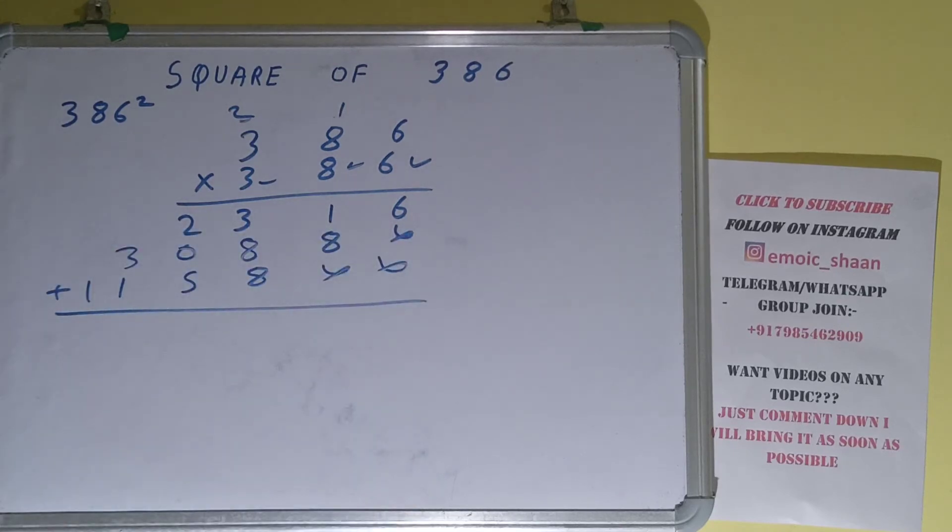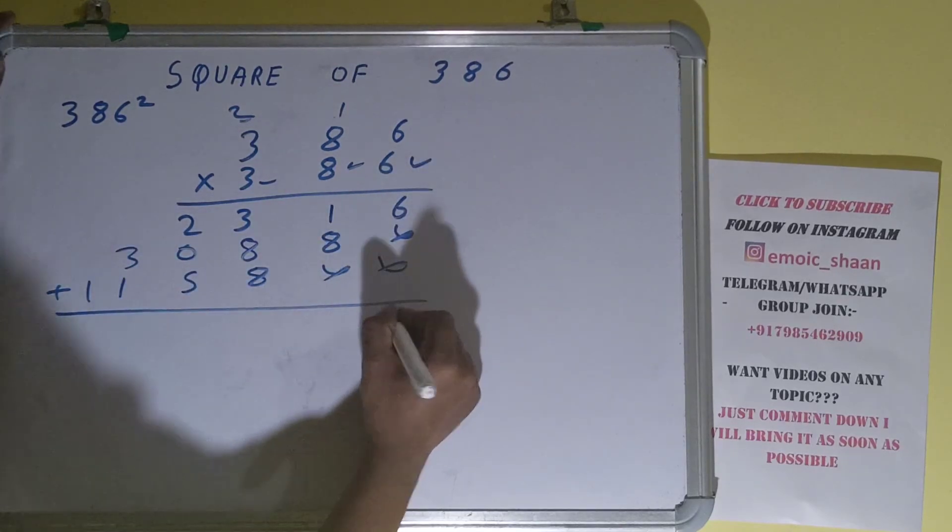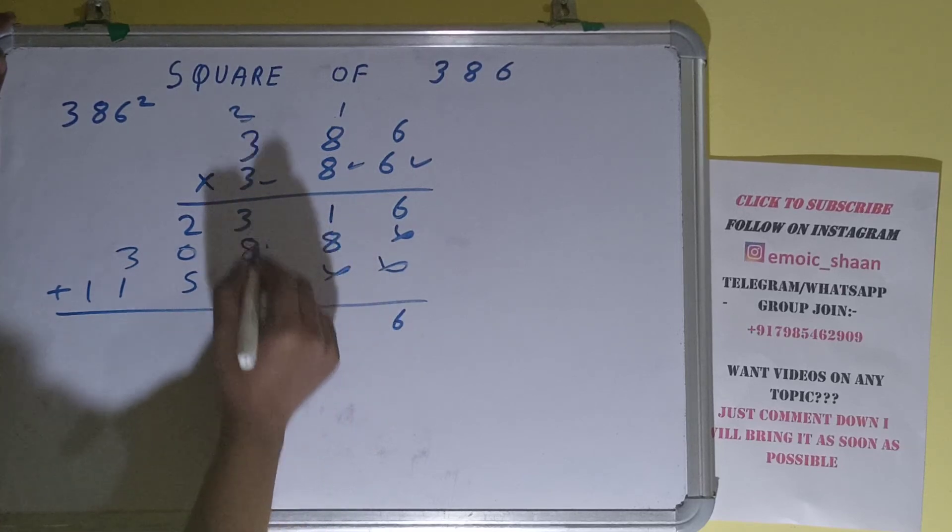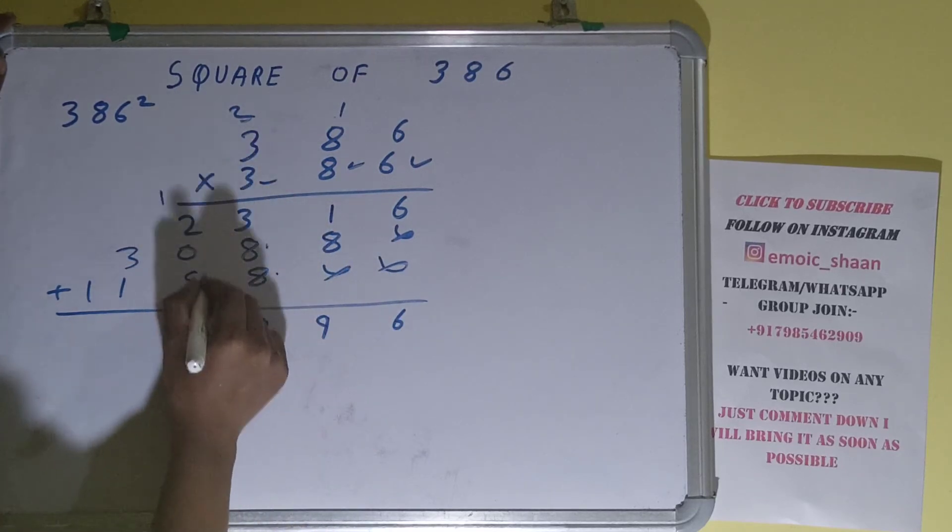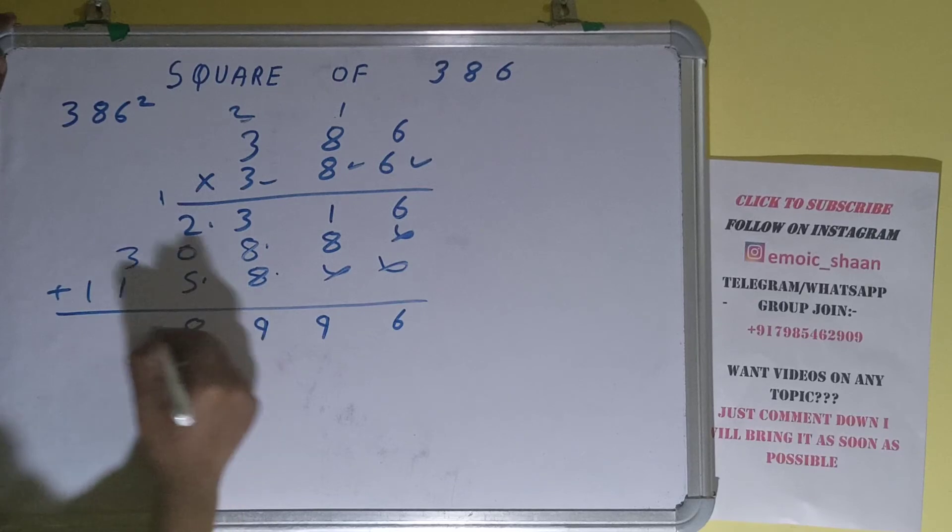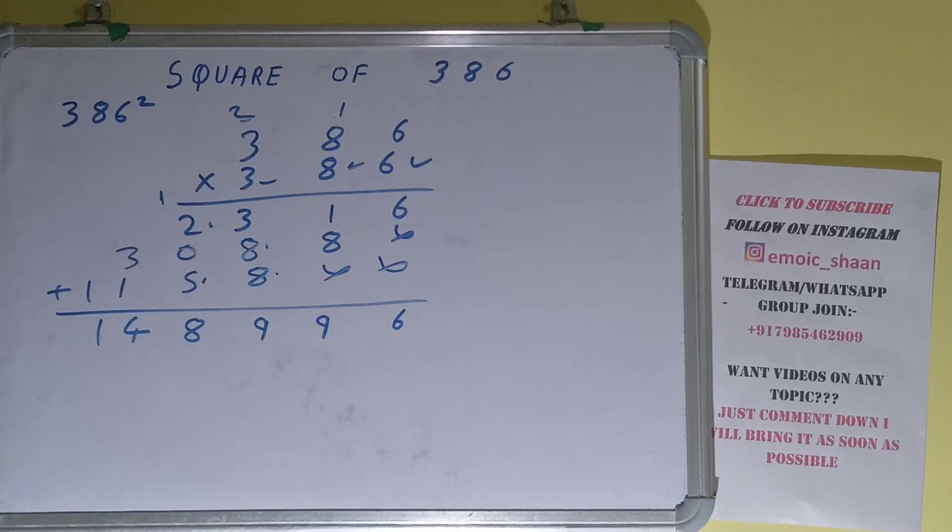Add everything carefully. So this will be 6, this will be 9, 8 plus 8 is 16 plus 3 is 19, 1 carry. 5 plus 2 is 7, 8, 4, 4, 1. Okay, so the answer will be 148,996. That will be square for the number 386.